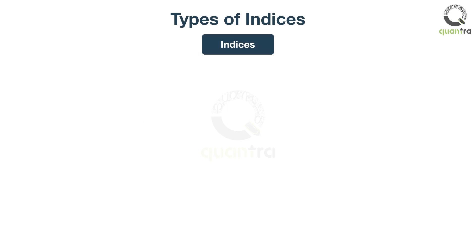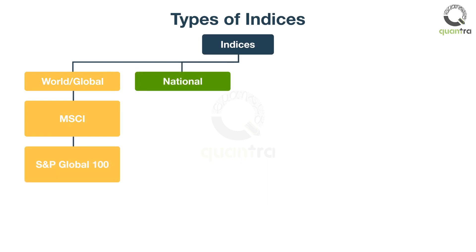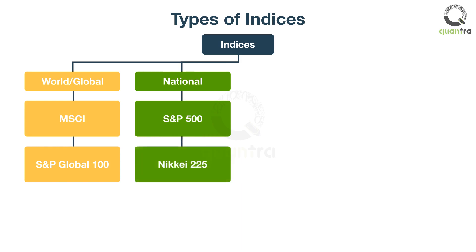Market indices can be classified in many ways, such as world or global indices that include assets from multiple regions. Examples include the MSCI World Index and S&P Global 100 Index. There are also national indices, which represent the performance of the stock market of a given nation — for example, the S&P 500, Nikkei 225, and so on. These indices are also known as broad-based indices.